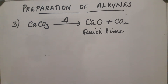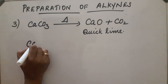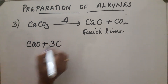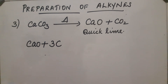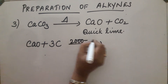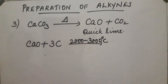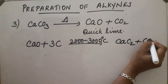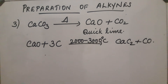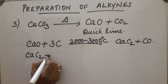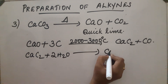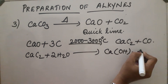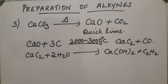In industry, the reaction takes place in a huge furnace at very high temperature. Calcium oxide (quicklime) on reaction with coke — three molecules of carbon — at a temperature of 2000 to 3000°C gets converted into calcium carbide and carbon monoxide. This calcium carbide on reaction with water gives calcium hydroxide and acetylene.